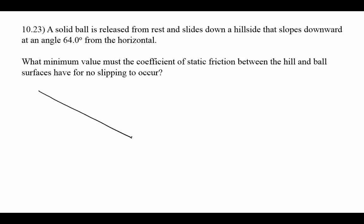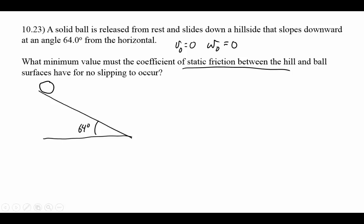Problem 10.23: a solid sphere ball rolling down a hill at 64 degrees with respect to the horizontal. Released from rest — v naught equals 0 and omega naught equals 0. What minimum coefficient of static friction is needed for no slipping? If no slipping occurs, then r omega equals v, and more importantly r alpha equals a. Looking at the force diagram: there's mg, a normal force perpendicular to the incline, and a static frictional force.